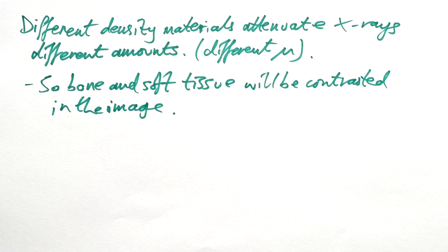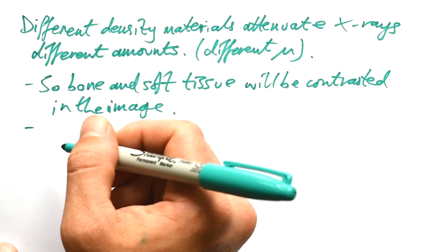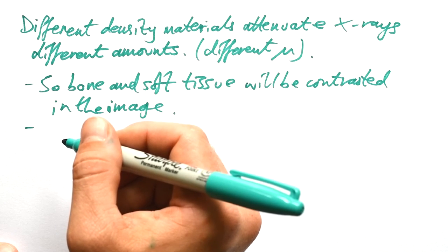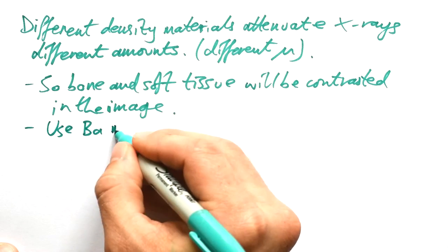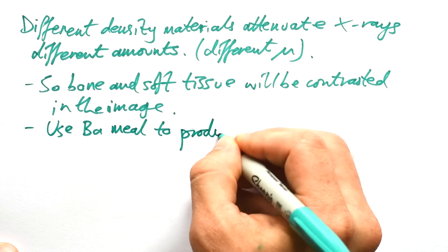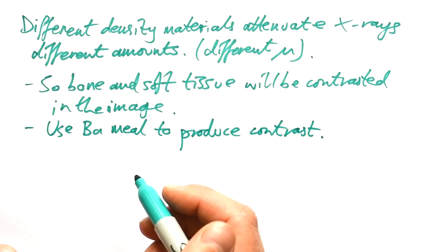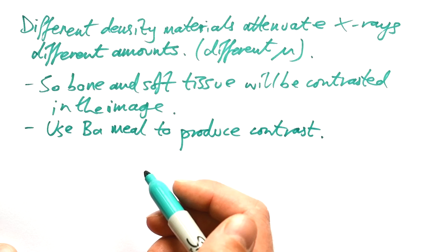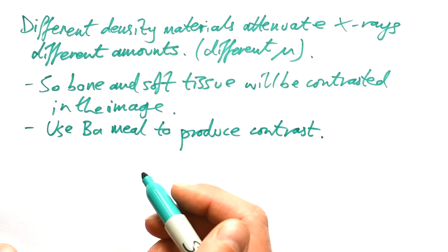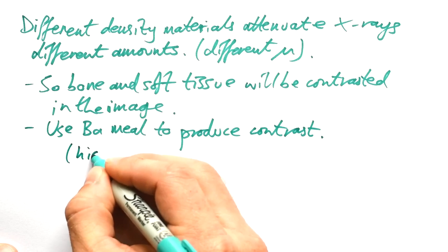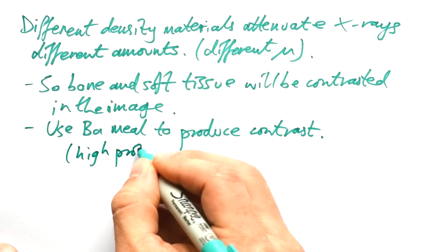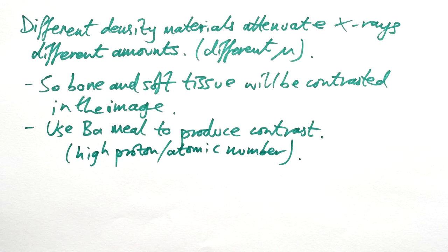But what if we're looking at a bit of the body which does have bits that are of a similar attenuation coefficient? Well, we can use a barium meal to produce contrast. If that goes into your gut, then you will be able to see the stomach clearly contrasted with what's around the stomach because of the barium in it. And that's because it has a high proton number, high atomic number. As a rule of thumb, the higher the proton number, the higher the coefficient of attenuation.